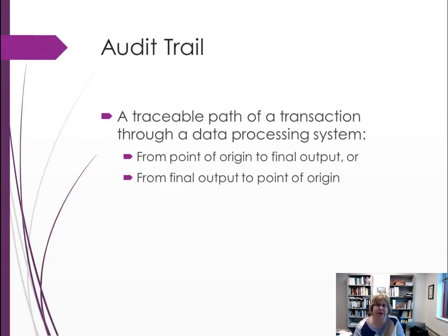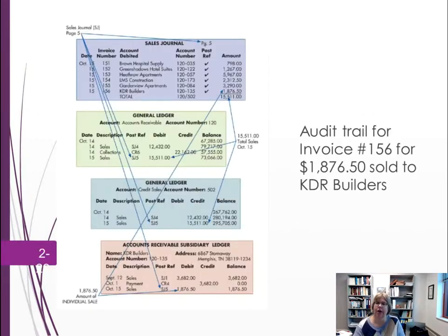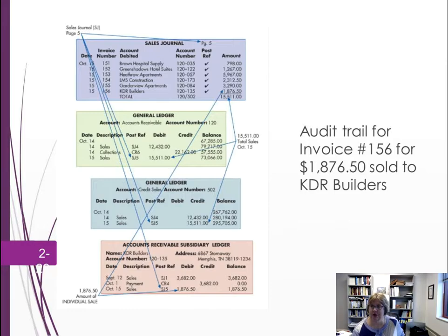The goal of this entire process is to leave an audit trail — a traceable path from the point of origin, such as a source document, all the way to the financial statements, and vice versa. For example, page 5 of the sales journal shows several individual sales for a date totaling $15,000. That total is then posted to the general ledger as a debit to accounts receivable.